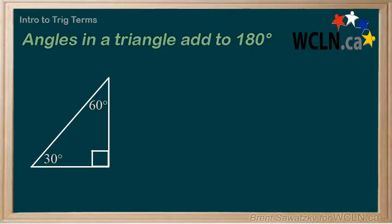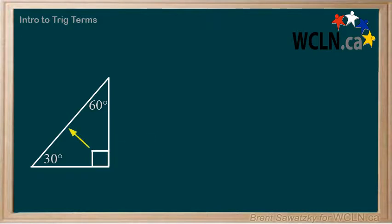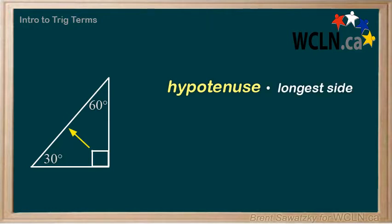Let's switch and talk about sides now. Which is the longest side on this triangle? Well, if this is the biggest angle, then the biggest side must be across from it. The longest side is always across from the biggest angle, or the 90-degree angle. We give the biggest side of a right triangle a name — we call it the hypotenuse, a Greek term. The hypotenuse is always the longest side, and it's always across from the 90-degree angle.